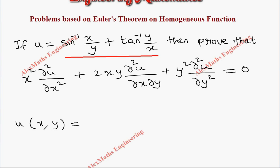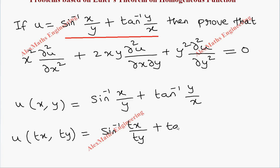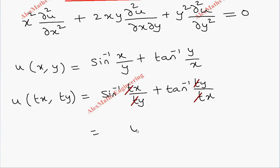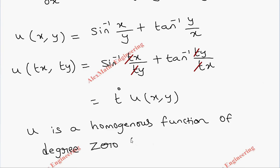Since the function is in terms of x and y, to check whether it is a homogeneous function or not, we have to replace x as tx and y as ty. So this becomes sine inverse of tx by ty plus tan inverse of ty by tx. After cancelling the t terms, we get the original function u of x comma y, with no t outside. So we write it as t to the power 0, making it clear that u is a homogeneous function of degree 0, that is n equals 0.